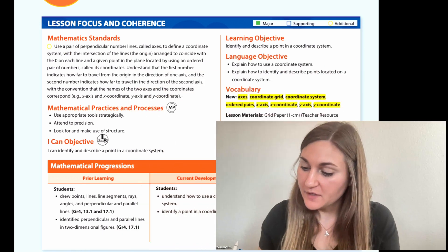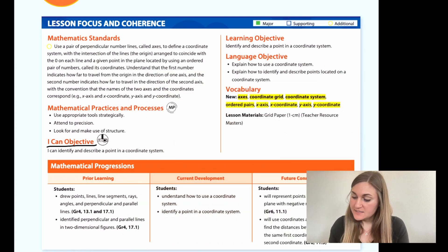Hi, I'm Natalie Rhodes and this is Into Maths 5th grade, Module 19, Lesson 1. I'm going to start off by going over the I Can Objective. It says I can identify and describe a point in a coordinate system.